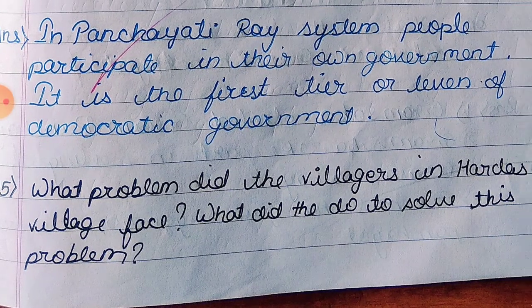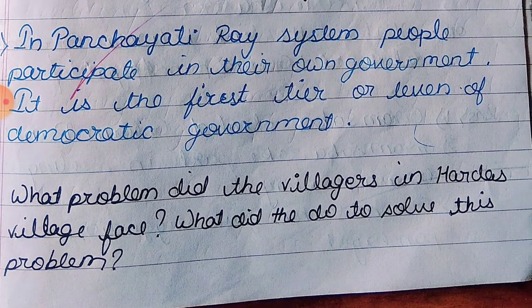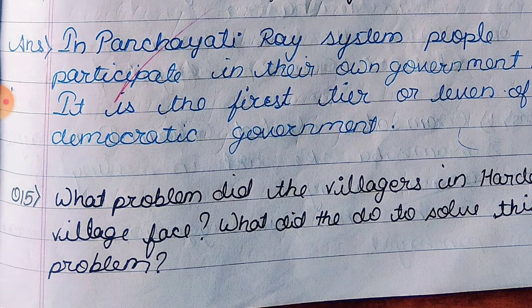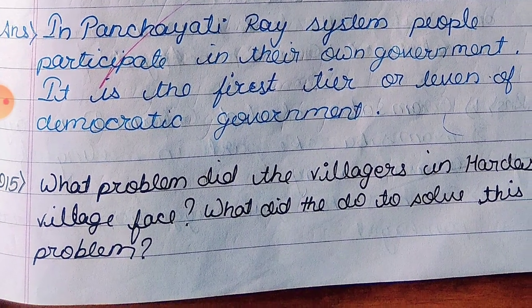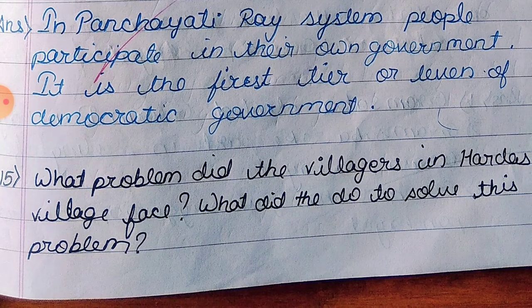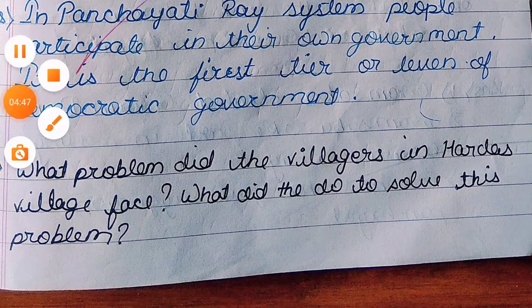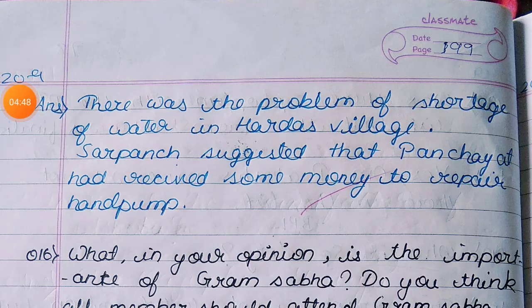Question 15: What problems did the villagers in Hardas village face? What did they do to solve this problem? Answer: There was a problem of water storage in Hardas village. The Panchayat head suggested receiving some money to repair the hand pump.